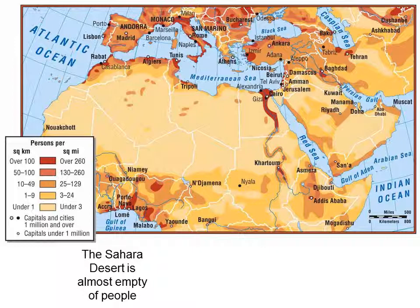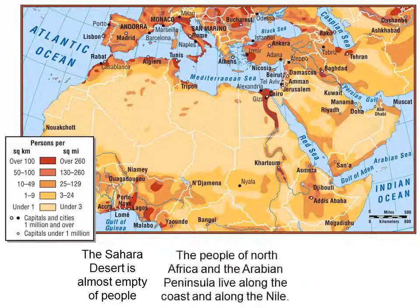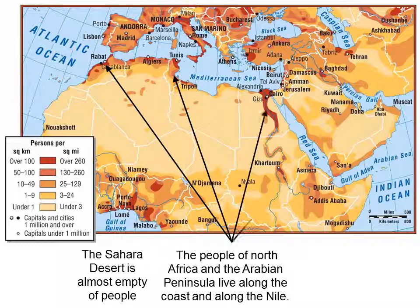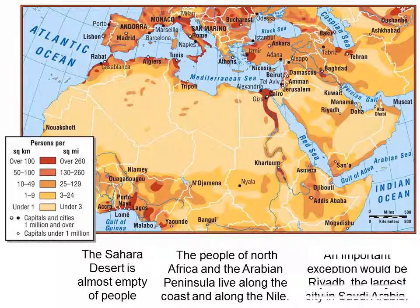The Sahara Desert is almost empty of people, as you can see in the population map. The people of North Africa and the Arabian Peninsula live along the coast and along the Nile. An important exception would be Riyadh, the largest city in Saudi Arabia.